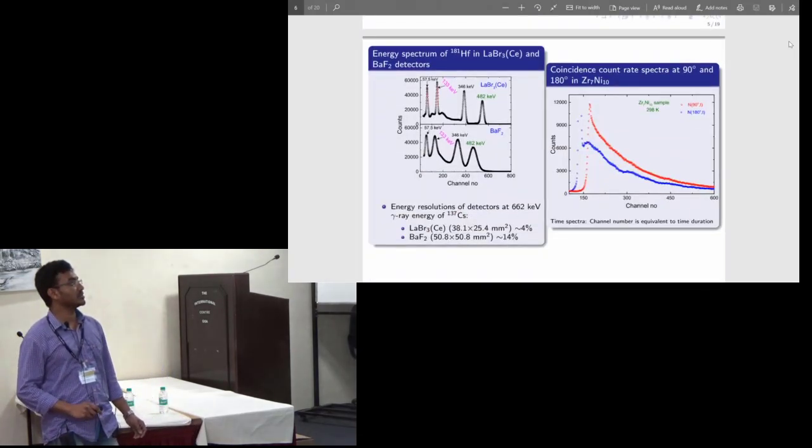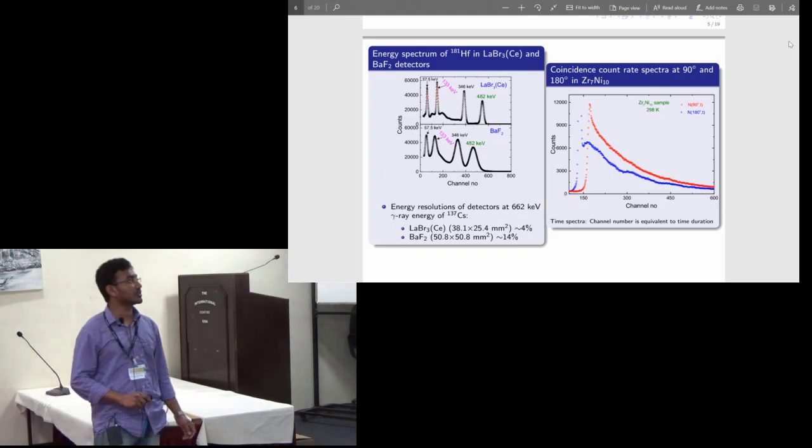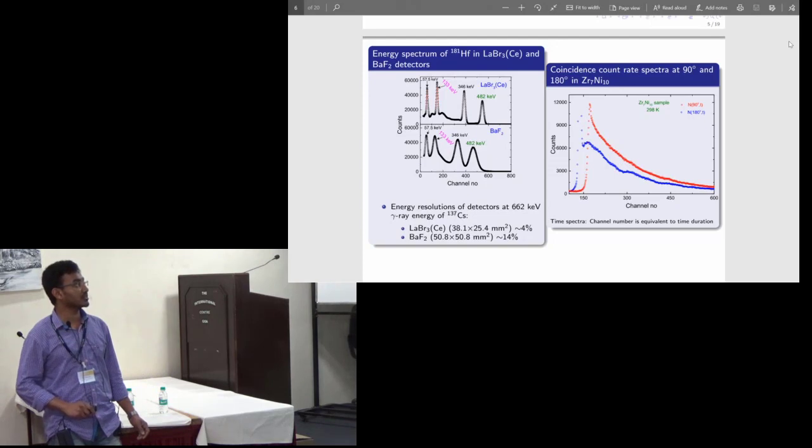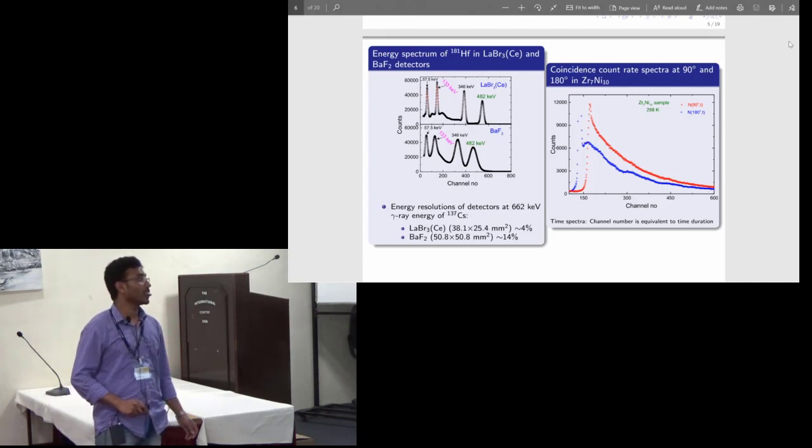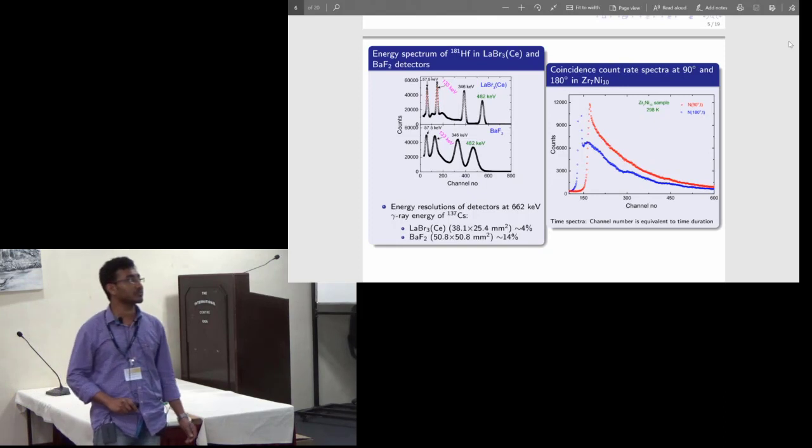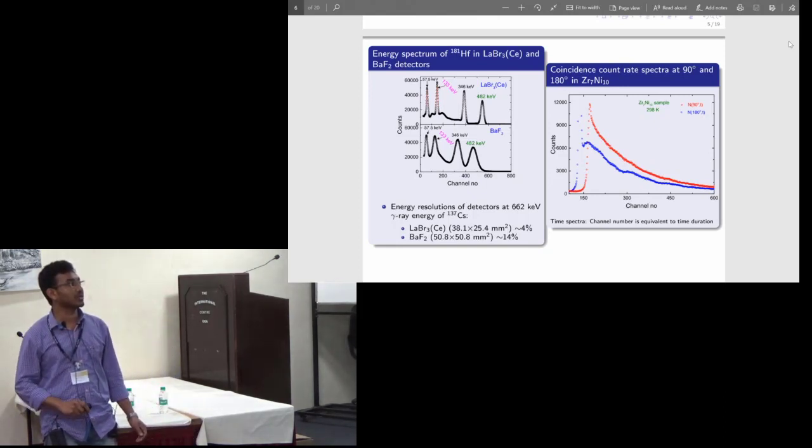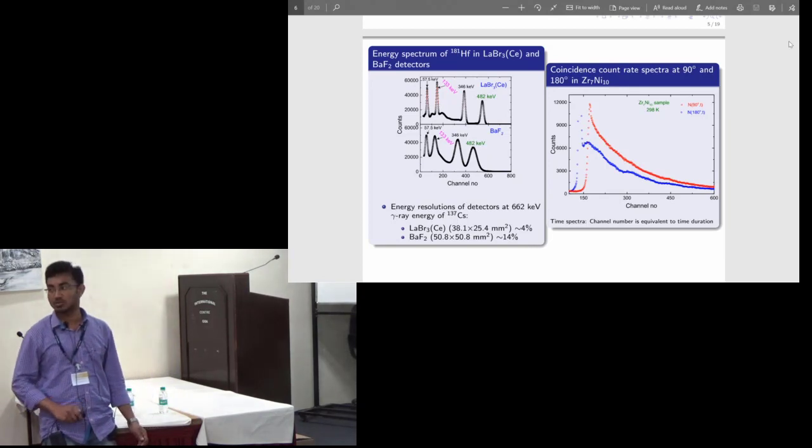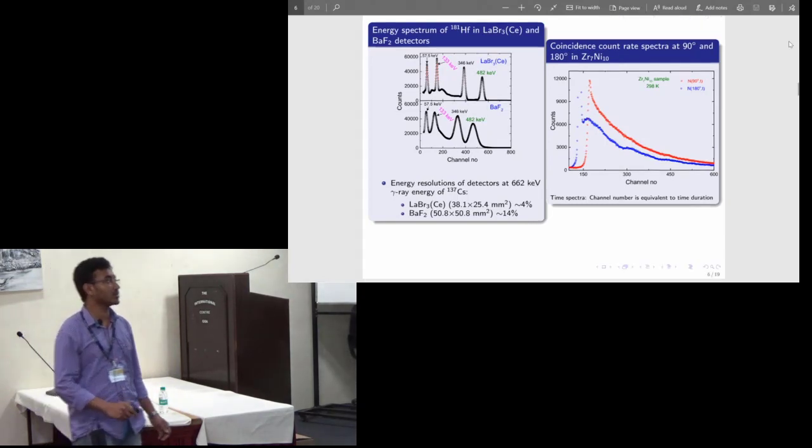This is the energy spectrum of 181 hafnium for LaBr3 scintillation detector and for BaF2 the energy spectrum looks like this. We use 133 as the start and 482 as the stop signal. The time resolution at hafnium energies for LaBr3 is 4 percent and for BaF2 is 14 percent. The coincident time rate spectrum at 90 degrees and 180 degrees for Zr7Ni10 is shown here. If there is no perturbation then there will be a simple exponential decay, but as there is perturbation we see the oscillations or modulations in the time coincident count rate spectrum.